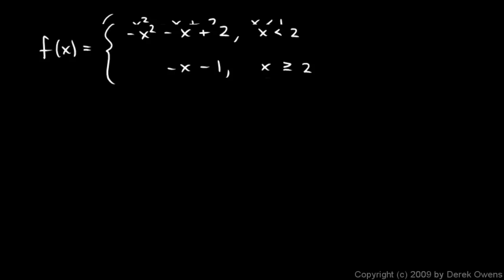So the definition of the function changes at this x value 2. So we want to find the limit as x approaches 2 from the left and the limit as x approaches 2 from the right. Get a value for both of those.